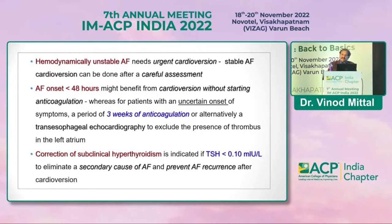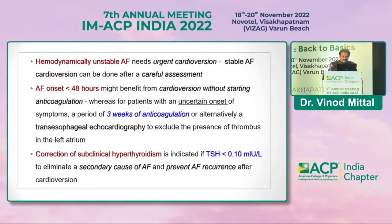If the onset is uncertain, three weeks of anticoagulation is required before cardioversion. Transesophageal echocardiography (TEE) should be done to exclude thrombus in the atrium — if no thrombus is found, we can be more liberal; if thrombus is present, urgent anticoagulation is required.